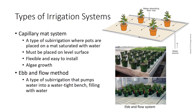The capillary mat system is a type of sub-irrigation where pots are placed on a mat saturated with water that is taken up by the growing medium via wick action through holes in the bottom of the pot. For the system to work properly, the mat must be placed on a level surface. The capillary mat system is flexible and easy to install, can readily accommodate different pot sizes, and plants can be rearranged as required throughout their life cycle. One disadvantage of this system is the potential for algae growth, which causes a number of other problems.